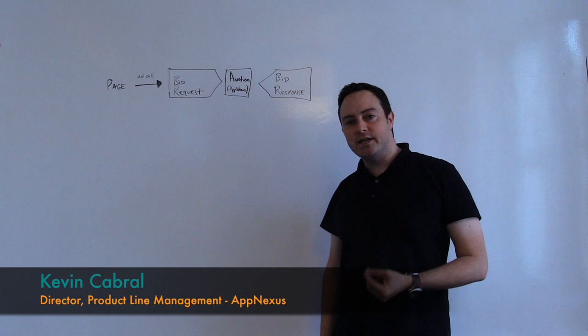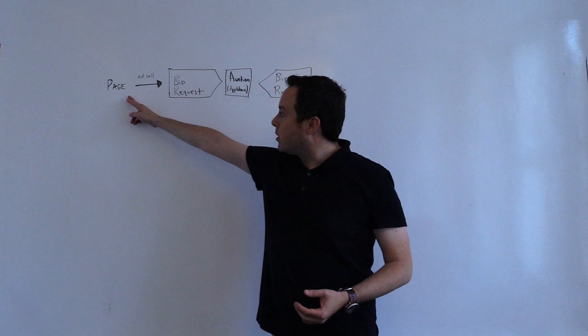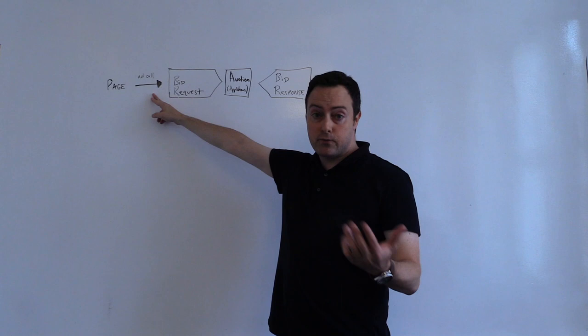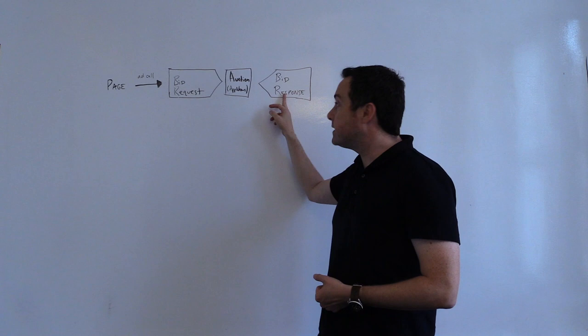Let me get started with a context for where auction mechanics fit into the end-to-end flow. As you know, the call comes to AppNexus from the page or indirectly through the header wrapper on the page, which results in a bid request being sent out and a bid response coming through from bidders once they receive that request, after which AppNexus holds an auction.